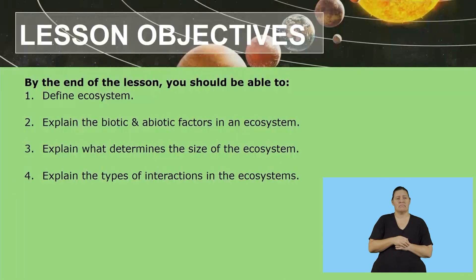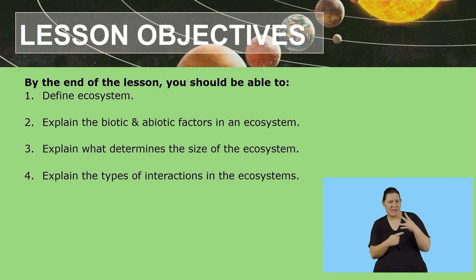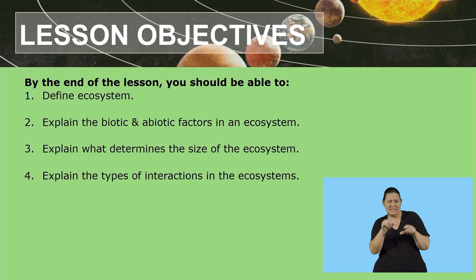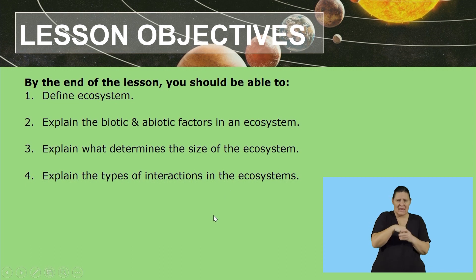Secondly, you need to be able to explain what biotic and abiotic factors are in an ecosystem. You then have to explain what determines the size of an ecosystem. And lastly, you need to be able to explain the types of interactions in an ecosystem.